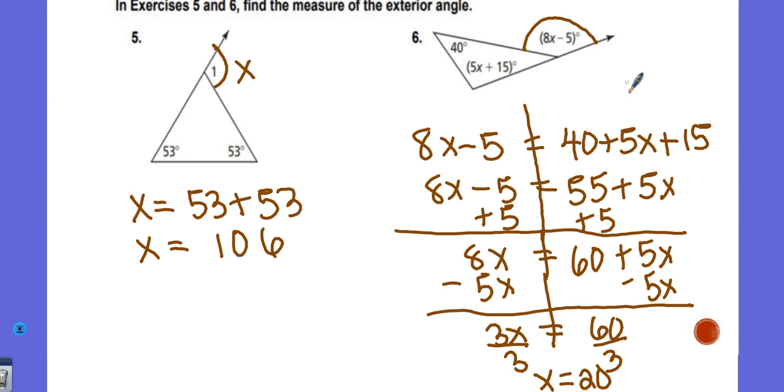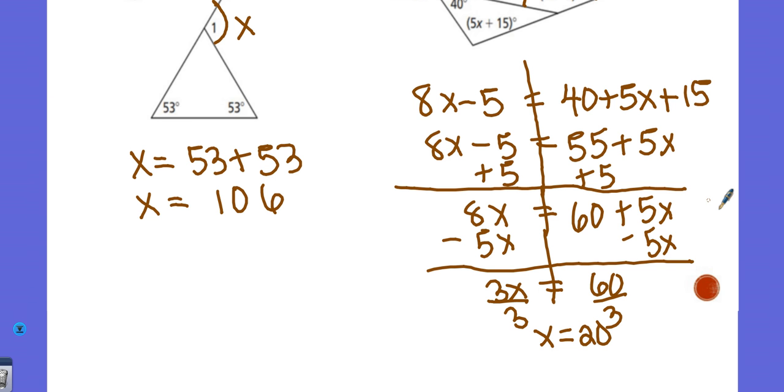But that's not what the question asks us to find. It said to find the measure of the exterior angle. So I have to go in and put 20 in for X so I can see what that angle actually equals. So we get 8 times 20 minus 5, which is equal to 160 minus 5, which is 155.